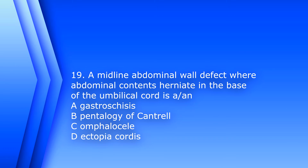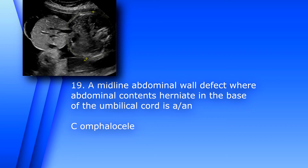Question 19. Midline abdominal wall defect where abdominal contents herniate into the base of the umbilical cord is: A. Gastroschisis. B. Pentalogy of Cantrell. C. Omphalocele. Or D. Ectopia cordis. The answer is C. Omphalocele. Gastroschisis is usually on the lateral side of the abdomen; it is not covered by a membrane or the umbilical cord. Pentalogy of Cantrell is also called thoracoabdominal syndrome and causes defects involving the diaphragm, abdominal wall, pericardium, heart, and lower sternum.